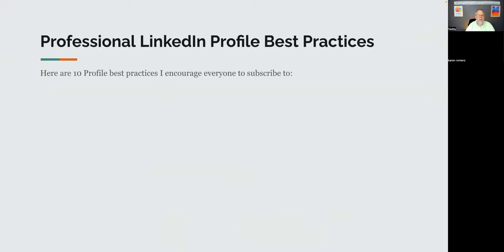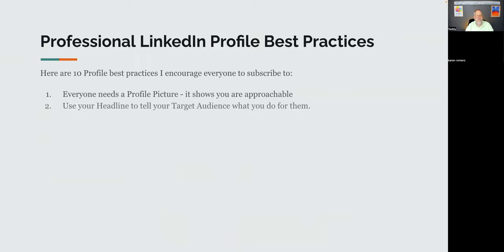Here are ten best practices. Number one: everybody needs a profile picture — it shows you're approachable. Number two: you need a headline that tells your target audience what you do for them — not your HR-assigned title. You get 220 characters there. Number three: make sure your contact information is up to date — click on contact info, customize your profile URLs, add your phone number and call it to make sure it rings, and put your professional email address in there. The more accessible you are, the more successful you'll be.